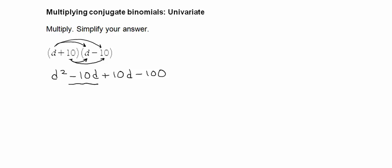So now if I look at my two middle terms, negative 10d plus 10d, they both go away. One's plus, one's minus, and I'm left with d squared minus 100. And that's my simplified answer.